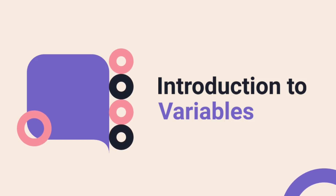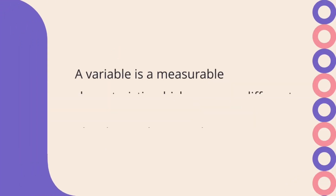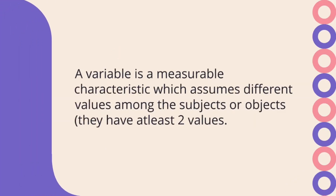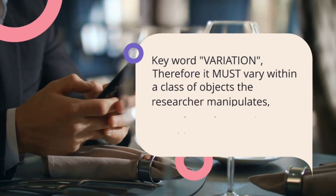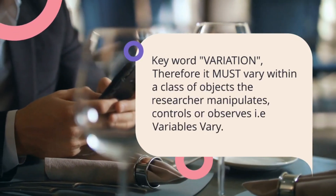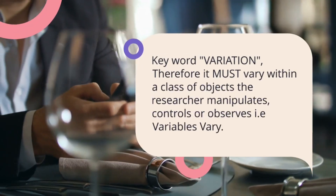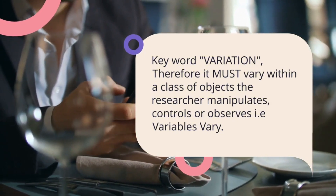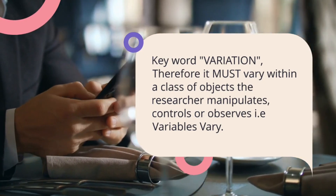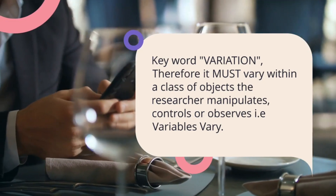So what is a variable? By definition, a variable is a measurable characteristic which assumes different values among subjects or objects, meaning they have at least two values. The key word in this definition is variation. Therefore, a variable must vary within a class of objects that the researcher manipulates, controls, and observes. In simple terms, variables vary.